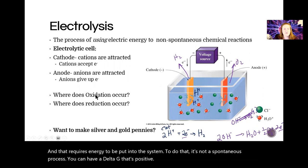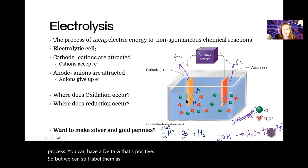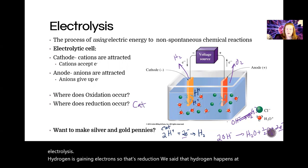But we can still label them as oxidation and reduction, right? So in the example of water electrolysis, hydrogen is gaining electrons, so that's reduction. And we said that hydrogen happens at the cathode. And the oxygen is being produced at the anode and that is losing electrons. So that's oxidation.